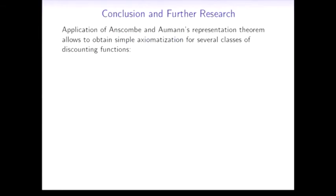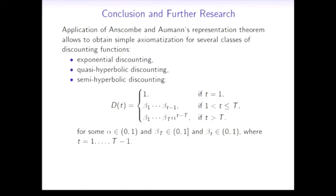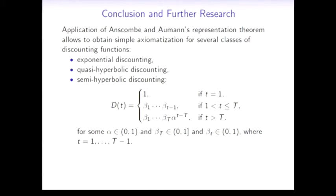Summing up, the key idea here is that application of Anscombe and Aumann's representation theorem allows us to obtain simple axiomatization of exponential and quasi-hyperbolic discounting, and I demonstrated it to you today. There is also one more general class of discounting which is called semi-hyperbolic discounting, and it's also possible to axiomatize this with the same instruments. However, there's experimental evidence that in fact individual preferences look more like generalized hyperbolic functions, and at this stage it's not quite clear how to axiomatize this. Thank you very much.